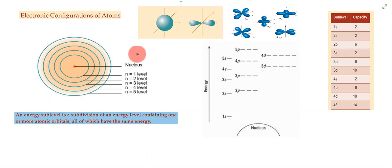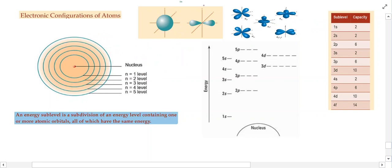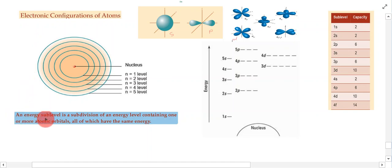We can look at what are known as orbitals, which have specific shapes. For example, these are s orbitals, these are p orbitals, and these ones here are d orbitals. Now I want to introduce the idea of energy sub-levels.